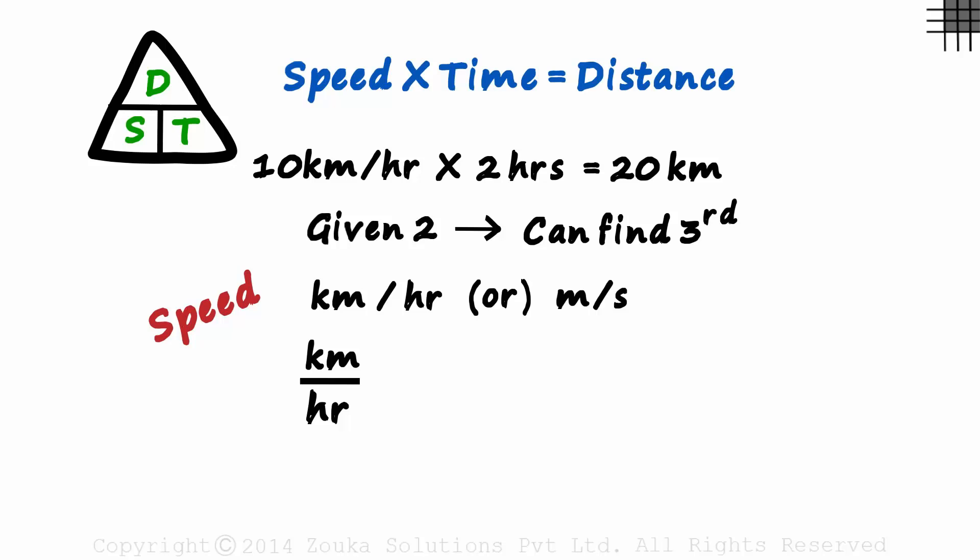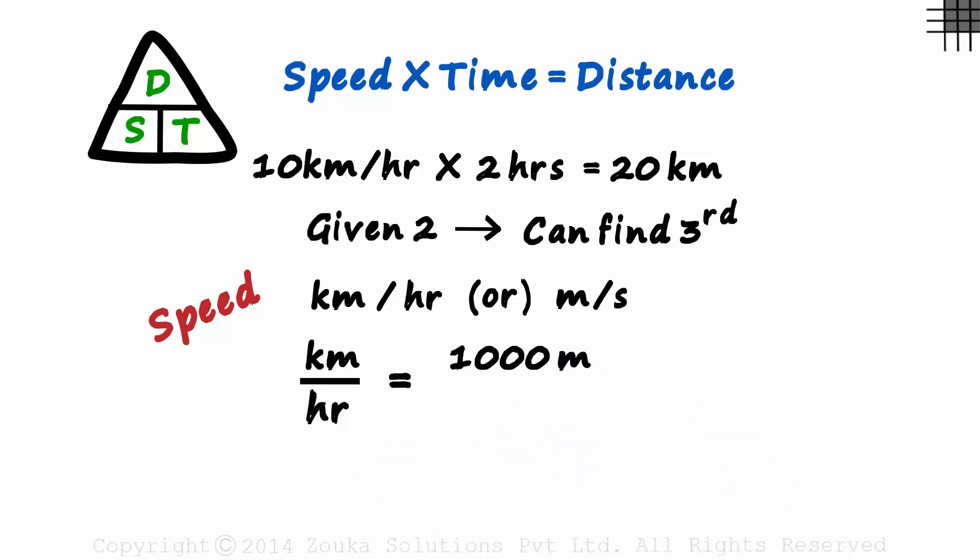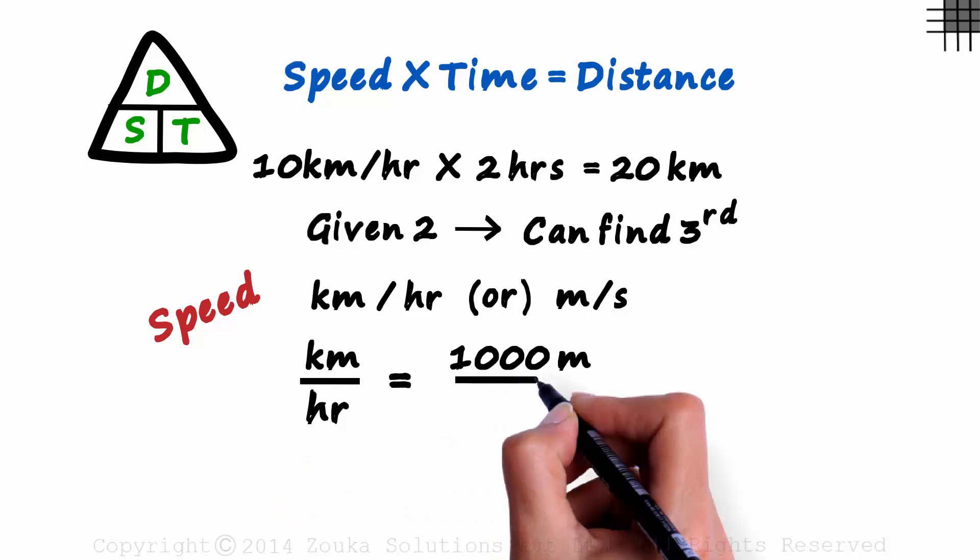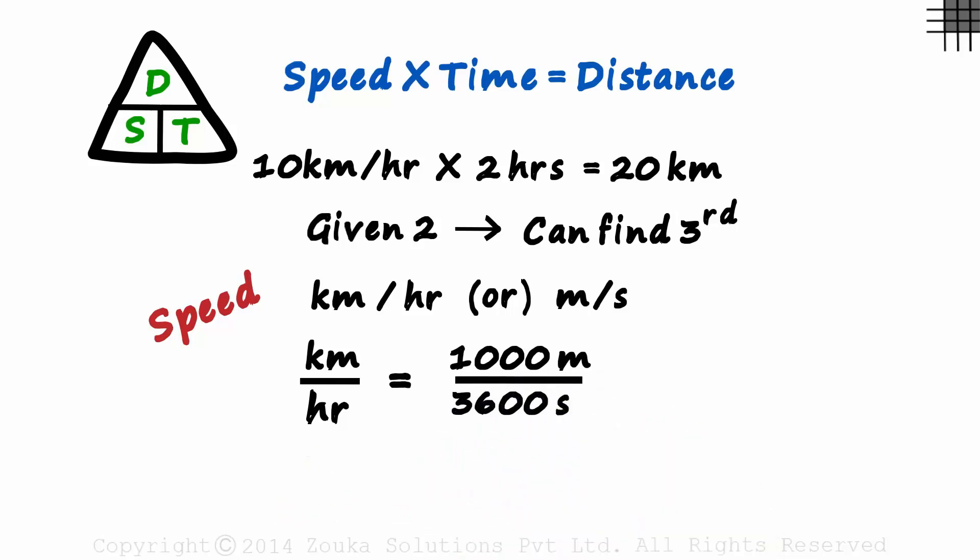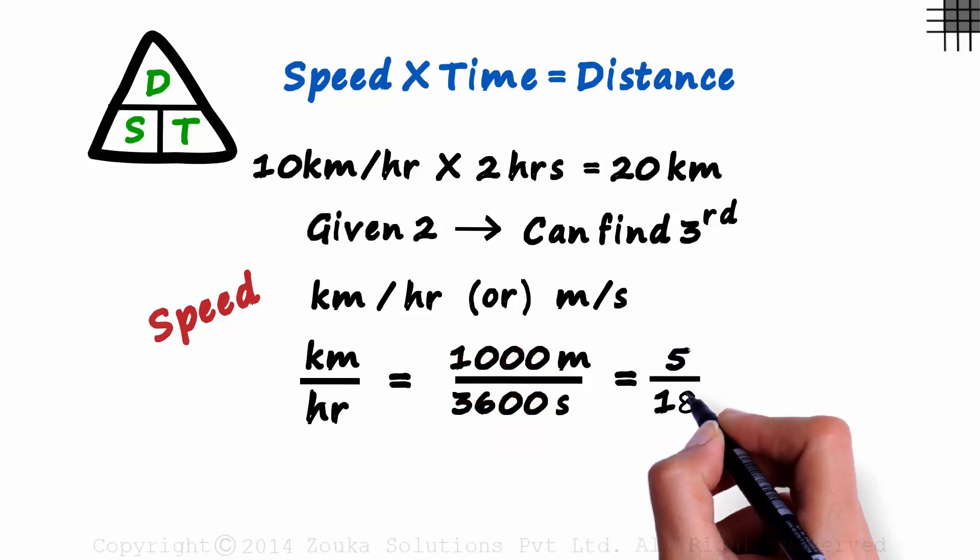We know that 1 kilometer is 1000 meters. And how many seconds is 1 hour equal to? 1 hour is 60 minutes and 1 minute is 60 seconds. 60 times 60 is 3600 seconds. Now we simply reduce this fraction to its simplest form. We cancel the two zeros. 2 times 5 is 10 and 2 times 18 is 36. So this is equivalent to 5 over 18 meters per second.